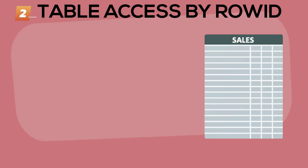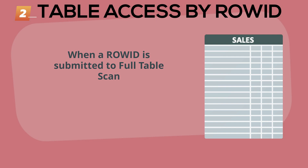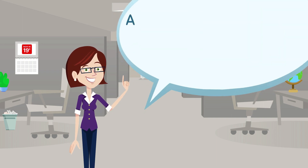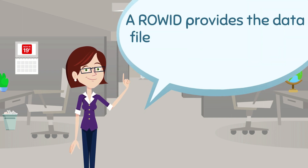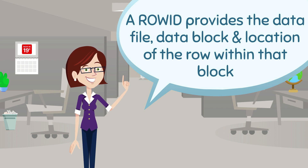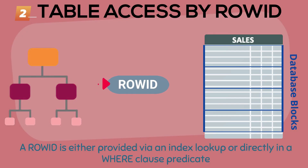Table access by row ID is also a very common access method. A row ID is an address or indicator that tells Oracle in which data file and inside which data block in that data file it's going to find a particular row. Along with the data file and the block number, you also get the offset or the location of that row inside the block. It's basically a shortcut to a particular row in a table, and those row IDs are either supplied via index access or perhaps directly in the where clause predicate, giving a shortcut to find the rows needed in the table.